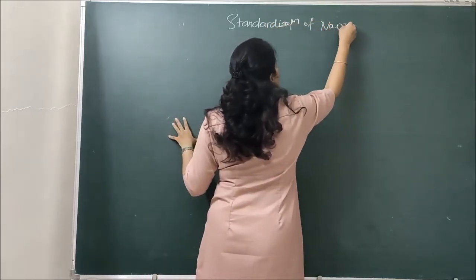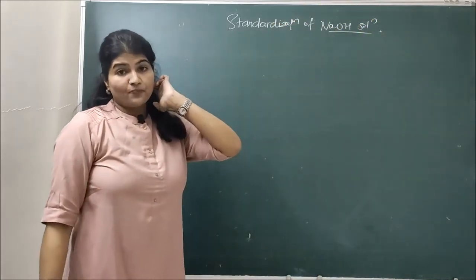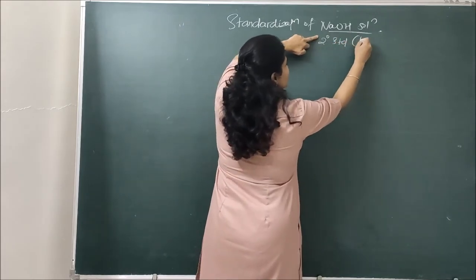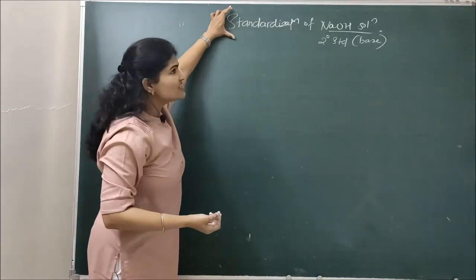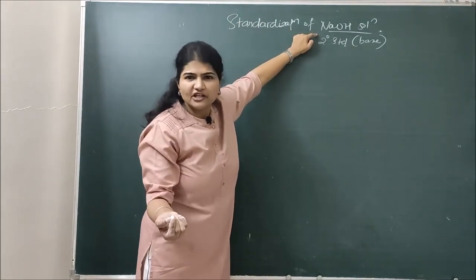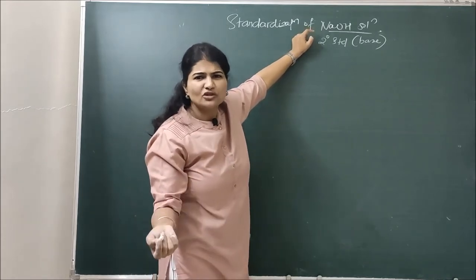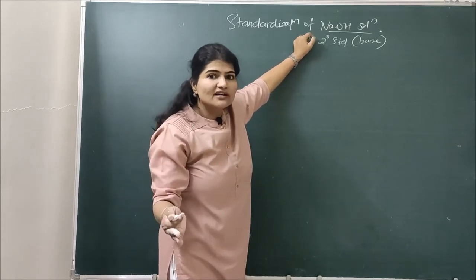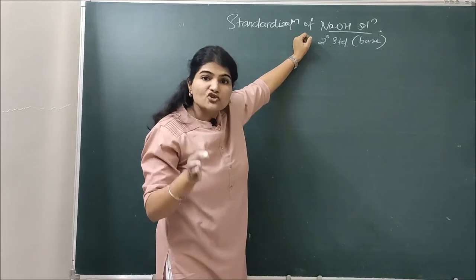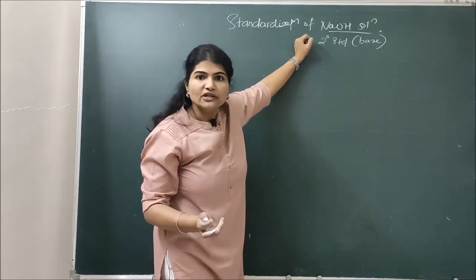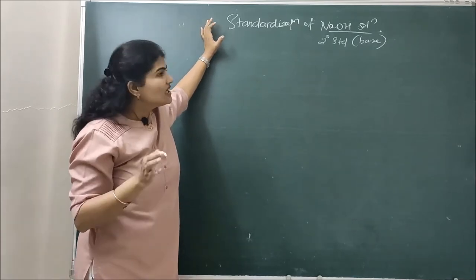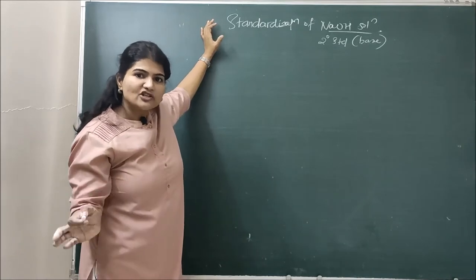Standardization of NaOH solution. Sodium hydroxide is a strong base and it is a secondary standard substance. Standardization is the process of finding out the actual concentration of NaOH solution. Theoretically, you will be given a particular concentration of NaOH, like 0.1 normal or 1 molar or 1 normal. But you cannot be sure that the stated concentration is exactly the same concentration which you have got. So you have to find out its actual concentration by standardization — comparing it with a primary standard substance through titration.